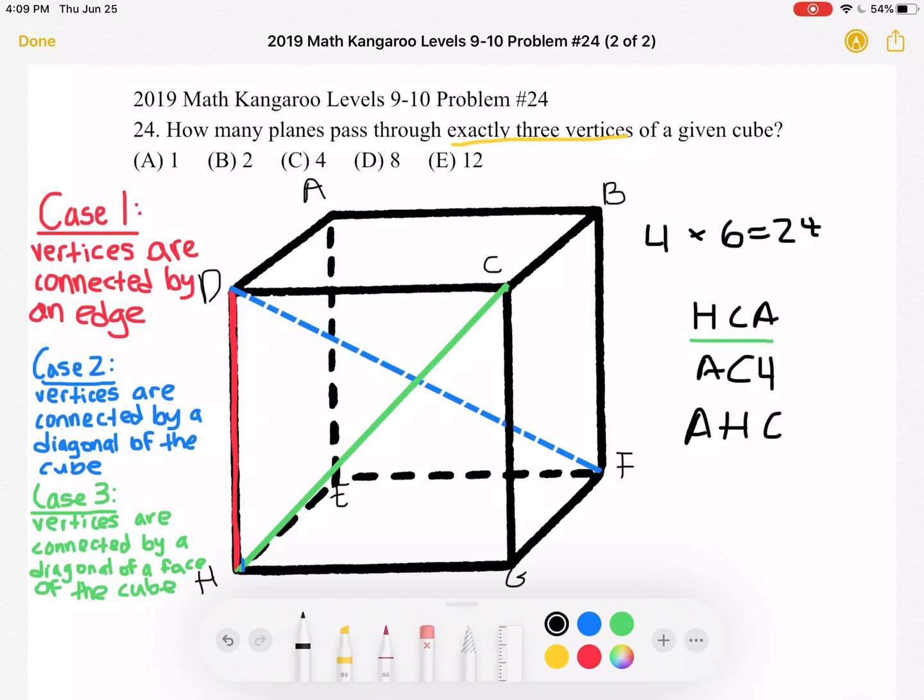So we must take 24 and divide it by three because again we got 24 planes but we counted each one of them three times and that will give us eight which is answer choice d. Thank you so much for watching and please subscribe if you would like to see more videos.